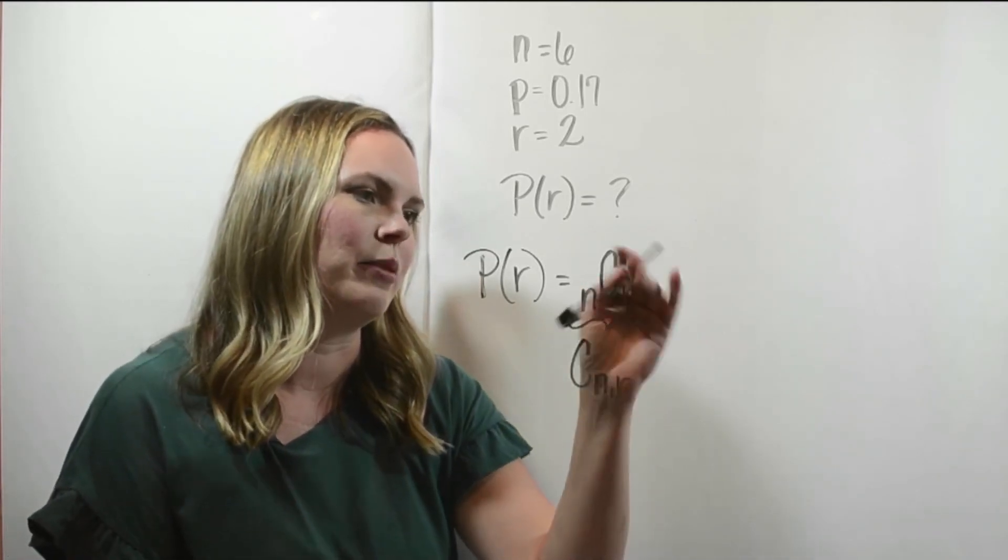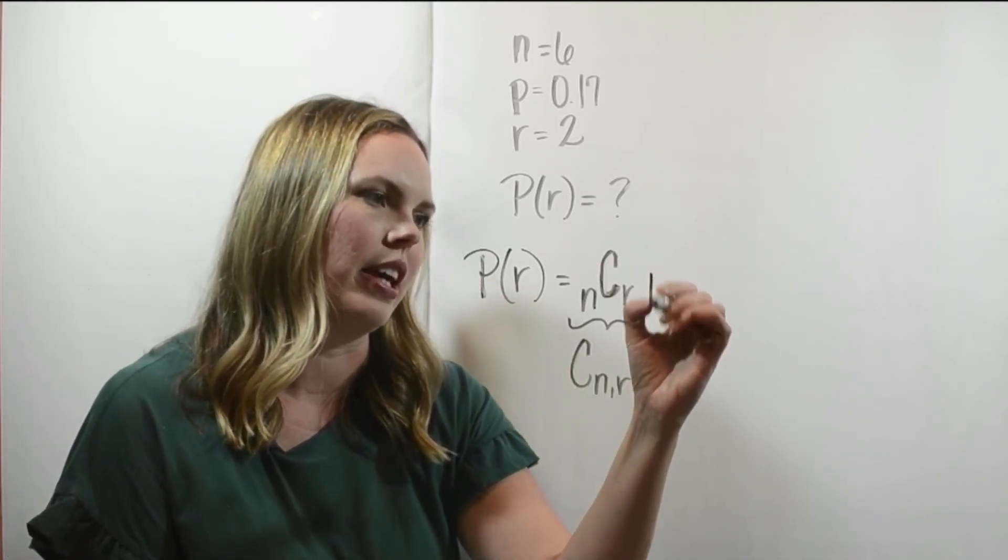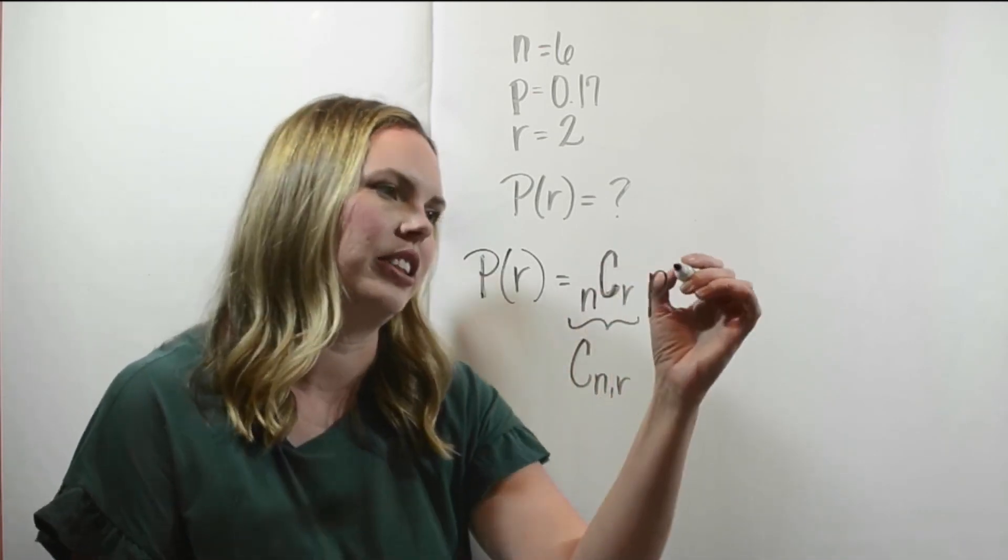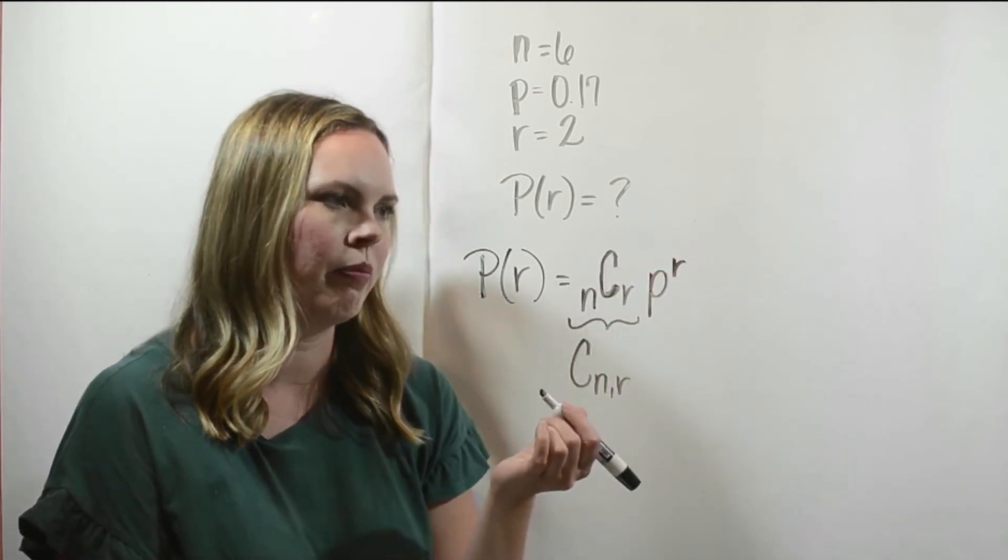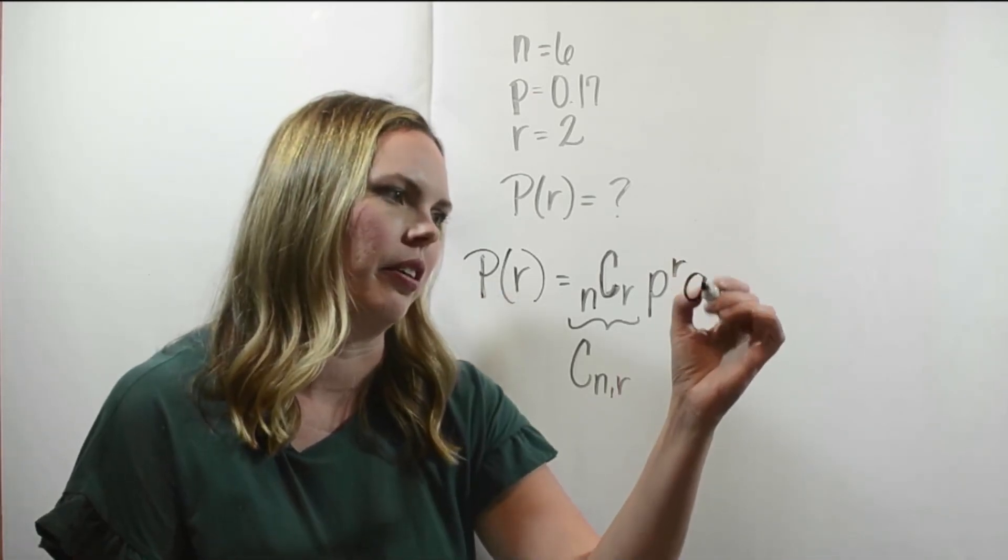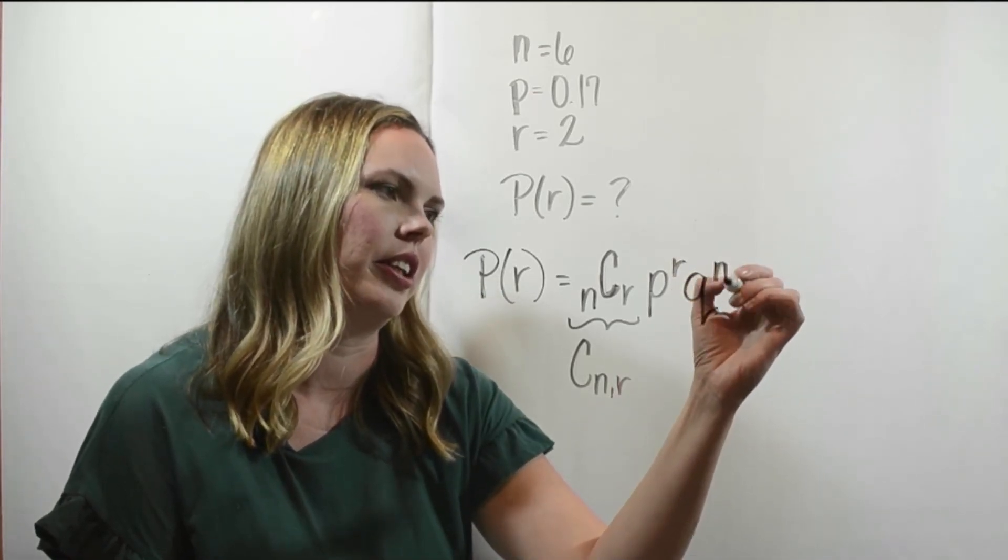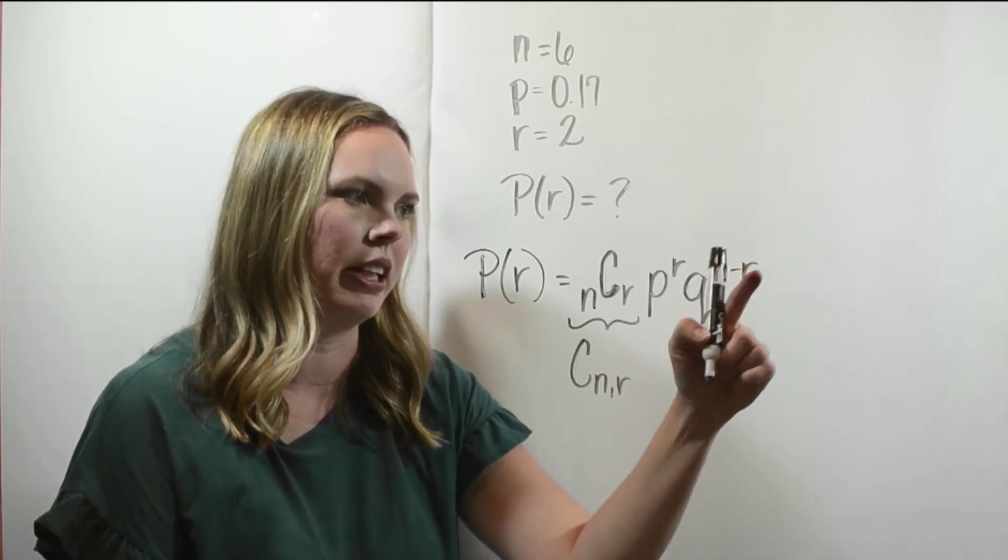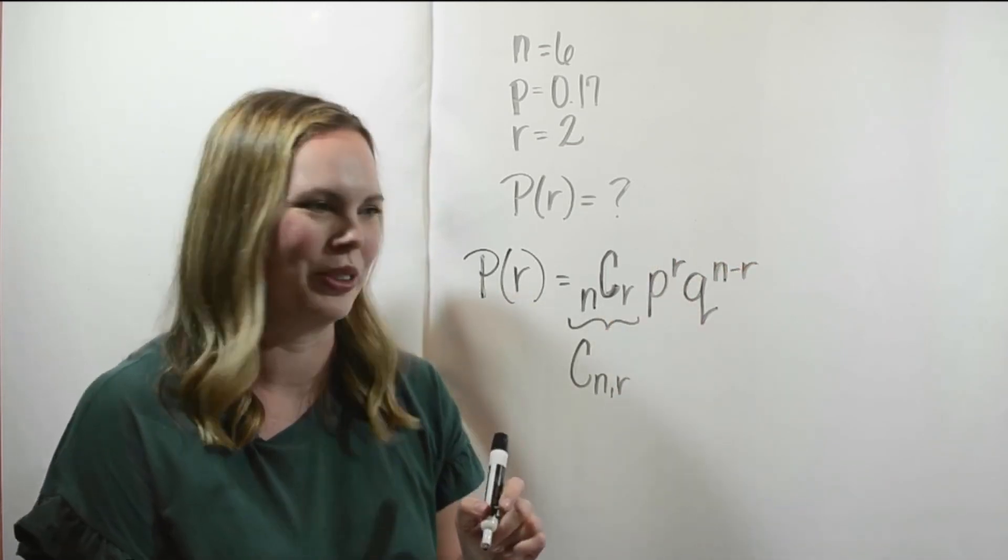And then, so that's the combination, and then we have P, so multiplication understood here, and P is raised to the R power, and then we have Q, and it is raised to the N minus R. So this R is in an exponent, and this N minus R is an exponent of Q as well here.